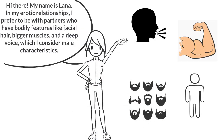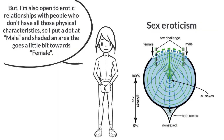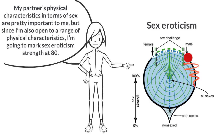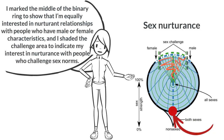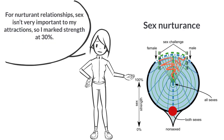Hi, my name is Lana. In my erotic relationships, I prefer to be with partners who have bodily features like facial hair, bigger muscles, and a deep voice, which I consider male characteristics. But I'm also open to erotic relationships with people who don't have all those physical characteristics, so I put a dot at male and shade an area that goes a bit towards female. My partner's physical characteristics in terms of sex are pretty important to me, but since I'm also open to a range of physical characteristics, I'm going to mark sex eroticism strength at 80%. In my nurturant relationships, I'm equally interested in people with female and male characteristics, and also interested in people who challenge sex norms. I marked the middle of the binary ring to show equal interest, and shaded the challenge area to indicate my interest in nurturance with people who challenge sex norms. For nurturant relationships, sex isn't very important to my attractions, so I marked strength at 30%.